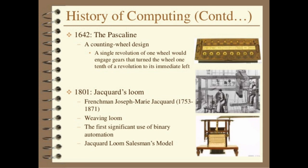In the early 19th century, a Frenchman, Joseph Jacquard, invented a loom that used punched cards to automatically control weaving. Jacquard's idea of storing a sequence of instructions on cards is conceptually similar to modern computer programs.